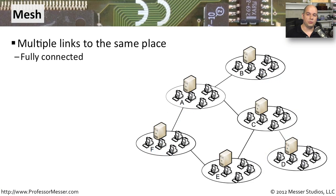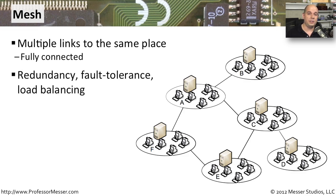A mesh topology is one where we have multiple links going to exactly the same place. You sometimes hear this referred to as a fully connected network. This provides advantages from a connectivity perspective — you've got redundancy and fault tolerance built in. If you lose a connection, you've got multiple links and can simply use the other connections to get around the problem. You also have the ability to do load balancing over these connections.